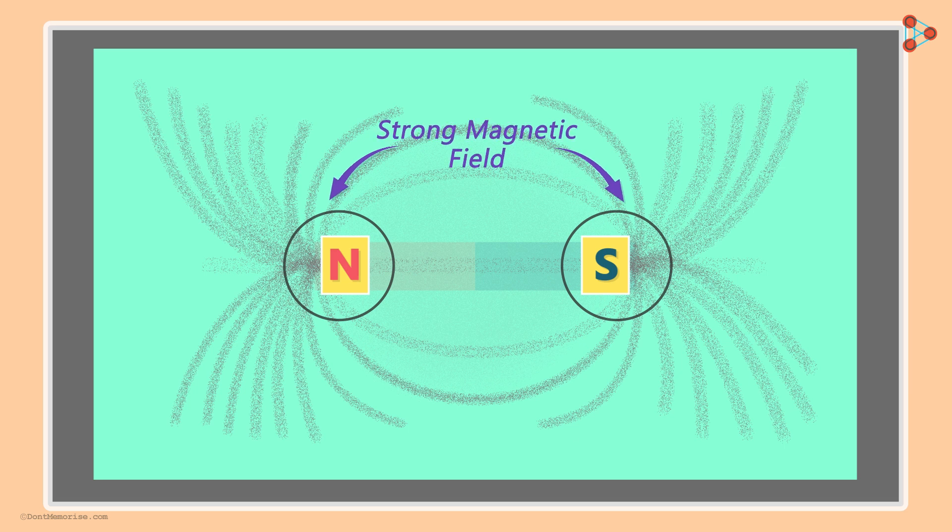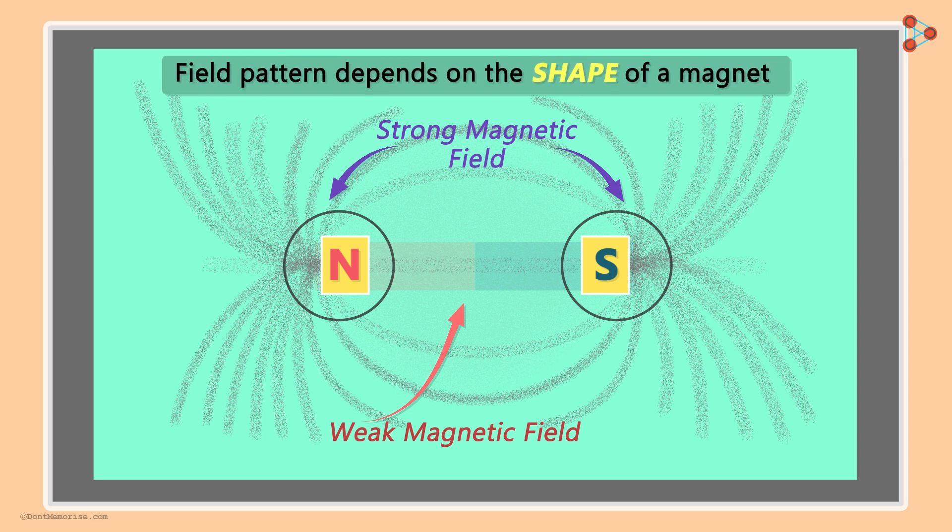And consequently, the field is weaker at the center. Not only a bar magnet, every magnet has a different field pattern. This field pattern depends on the shape of a magnet.